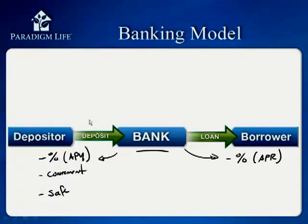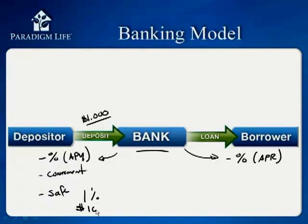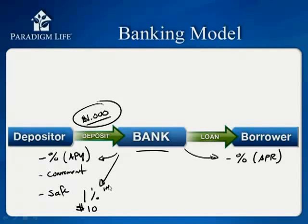Let's do some numbers. Let's assume that during the year you have $1,000 on deposit — that's kind of what you keep in there as your buffer. If a bank were to pay you 1%, what would that dollar amount be? It would be $10. So during the year, banks would pay you $10 on the average balance of $1,000. That can be considered the bank's initial investment in you — what it takes to entice you to keep your money there.